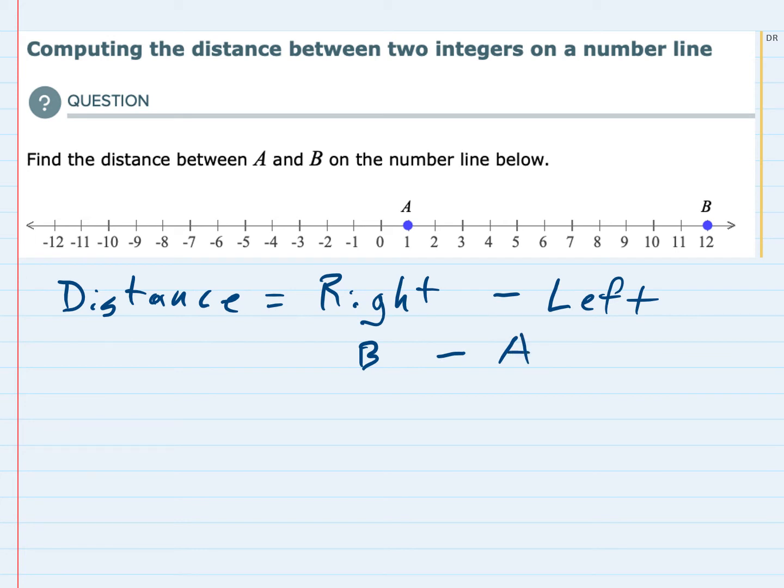So substituting those values, I have that the distance is going to be b, which is 12, minus a, which is a positive 1.